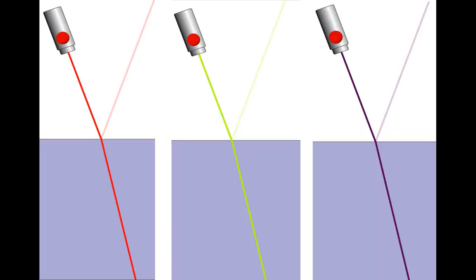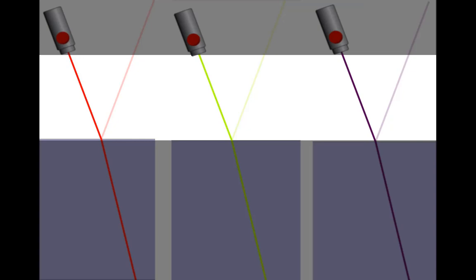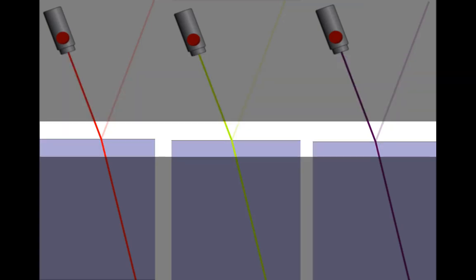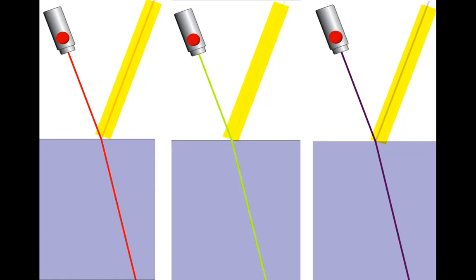Here we can see light of different wavelengths and different colours being shone by a light source through one medium, hitting a boundary between two media and entering a second medium. In all cases the light is then bent — it is refracted. Some of it is also reflected, but for now we're going to ignore that. So the issue we want to investigate is: does it make a difference which colour of light you use? Does that affect how much the light is bent or not?